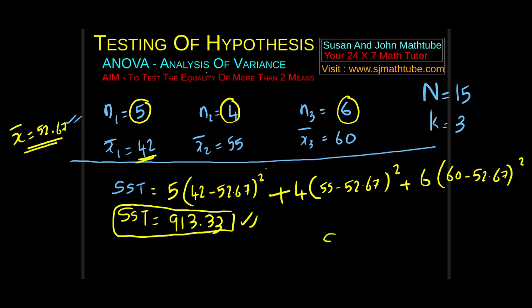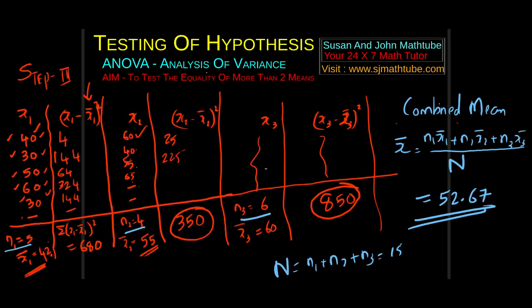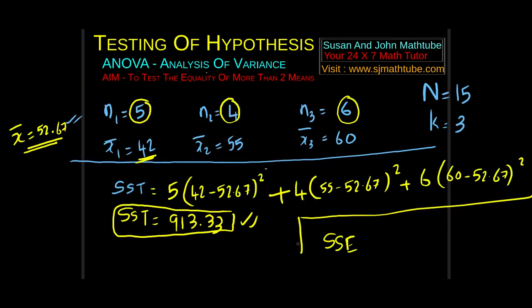And next is SSE. For that, it is very easy. We already have the sum of squares. We found something like this. Add them up, you get SSE. The sum of squares of errors is 1880.